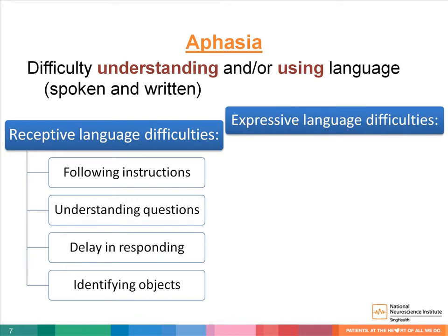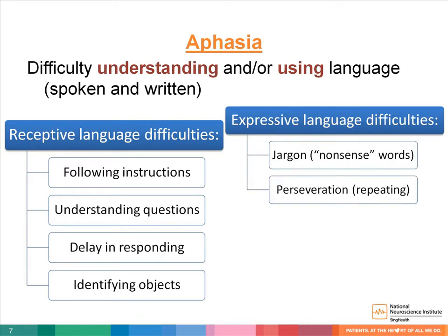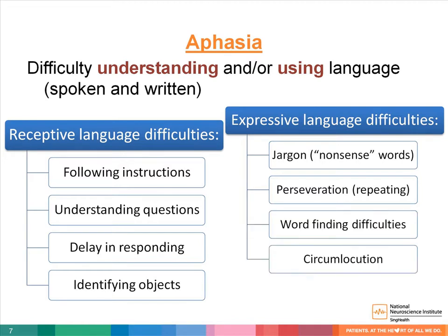They may also present with jargon, which are made-up words, perseveration or repeating the same word, word-finding difficulties, circumlocution where they describe the idea and talk around it instead of saying the actual word, and replacing the intended word with other words. A more severe form of aphasia, global aphasia, is where there are great difficulties in both the use and understanding of language.